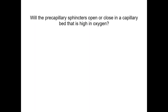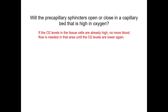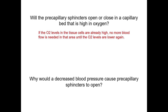You should be able to predict what would happen to the sphincters in response to different local or systemic conditions. For example, will the pre-capillary sphincters open or close in a capillary bed that is high in oxygen? If you answered close, you are correct. If the O2 levels in those tissue cells are already high, no more blood flow is needed in that area until oxygen levels are lower again. Now go ahead and try to answer this one on your own.